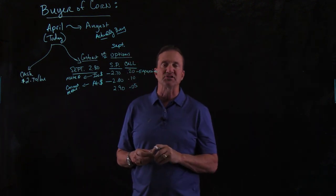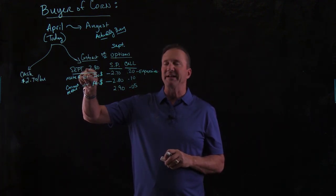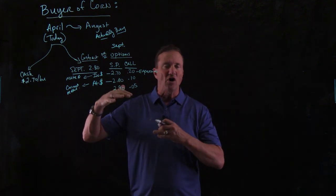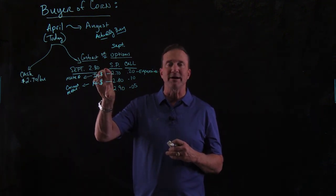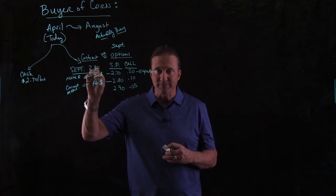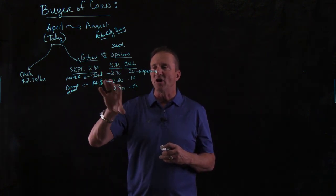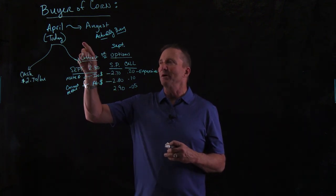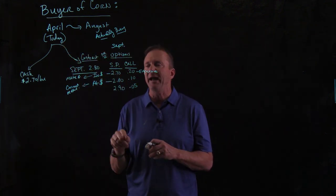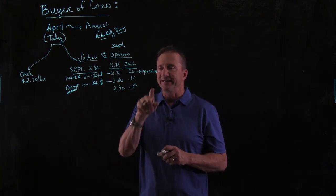The futures market right now is at $2.80, so the market's moving all the time. That means these strike prices become at the money, then they become in the money, or they move. These aren't always going to be the same. But right now today, this is my snapshot. These are what I have. That makes this $2.70 in the money, and it's expensive.